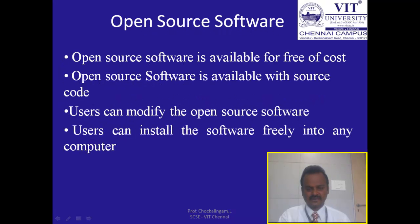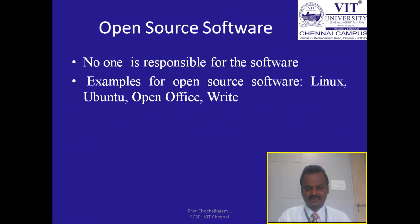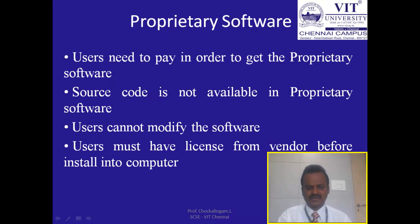Open source software is available free of cost, available with source code, and users can modify the software. Users can install the software freely into any computer. No one is responsible for the open source software — if you have any problem, there is no person in charge to contact. Examples of open source software are Linux, Ubuntu, and OpenOffice.